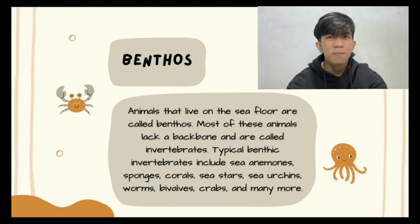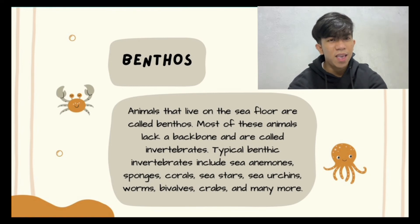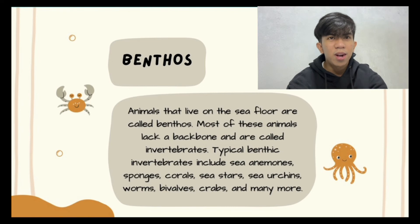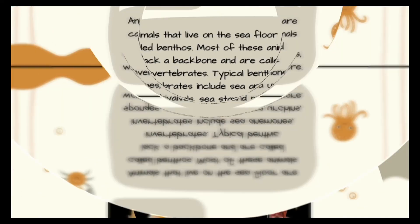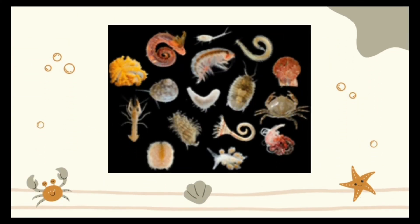The last group are benthos. Benthos are living things on the ocean floor. Many benthic organisms attach themselves to rock and stay in one place — this protects them from crashing waves and other water movements. Some benthic organisms burrow into sediments for food or protection. Benthic animals may also crawl over the ocean floor. Examples of benthos include clams and worms. Here are some examples of benthos.